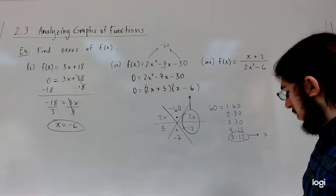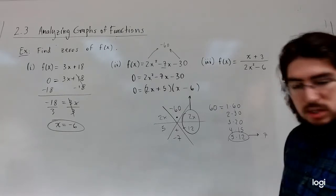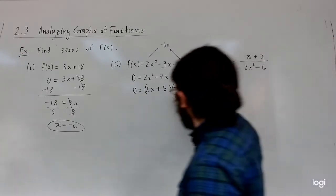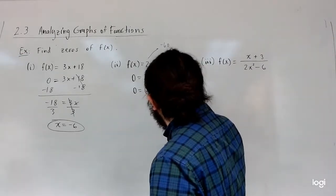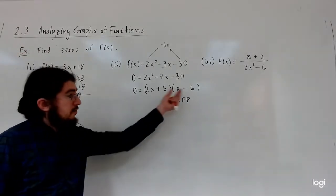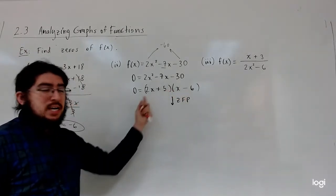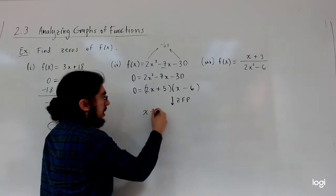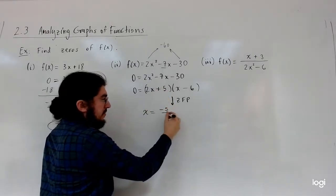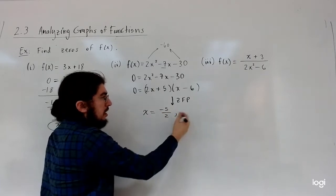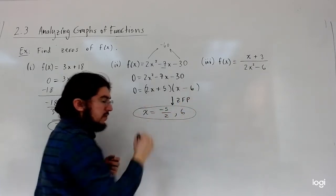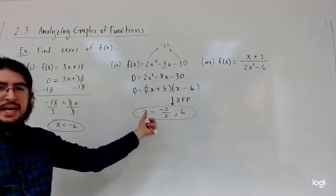Now using the zero factor property: you change the signs of the numbers next to x and divide by any number in front of x. So here, changing the sign for 5 gives you negative 5, and then dividing by 2. Changing the sign of negative 6 gives you positive 6. So these are the zeros — negative 5/2 and 6.